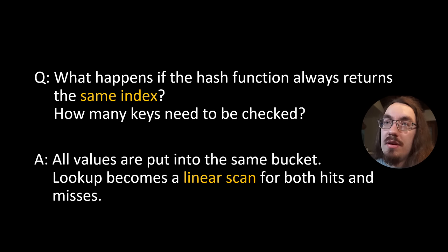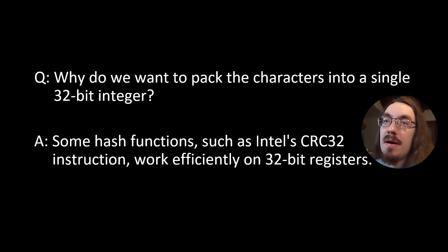So let's take a look at those pop quizzes and see if we can answer them. So the first pop quiz, what happens if the hash function always returns the same index? How many keys need to be checked? The answer is bad things. All values are put in the same bucket and the hash lookup function needs to check every single bucket to see is there a match. Lookup devolves into a linear scan for both hits and misses and it's probably slower than blasting through an array.